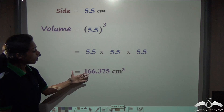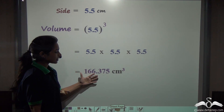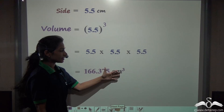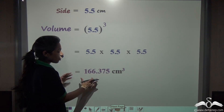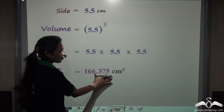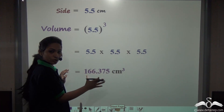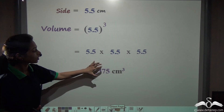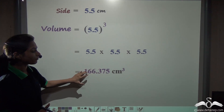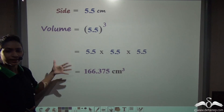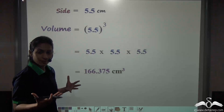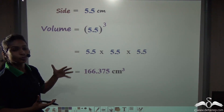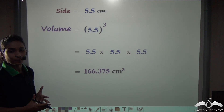That gives around 166.375 centimetre cube. This is how we find out the volume of a cube — the cube of a decimal number is found the same way as finding the cube of any whole number.